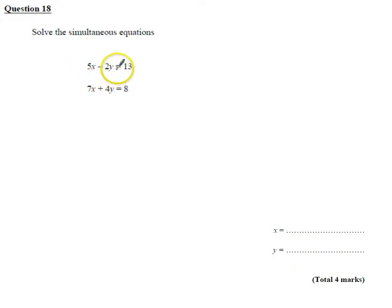In this question, it seems convenient if we double this top equation. You can see we're going to get 4y here, or minus 4y here, and 4y here. So let's double this top equation and let's get 10x minus 4y is equal to 26, and then let's keep this bottom equation the same, 7x plus 4y equals 8.